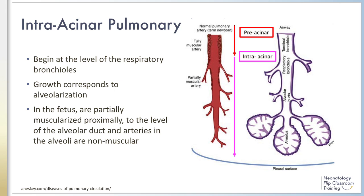Angiogenesis of the intra-acinar arteries occurs in parallel to alveolarization. In addition, the intra-acinar arteries are partially muscularized to the level of the alveolar duct and are non-muscularized in the alveoli itself.